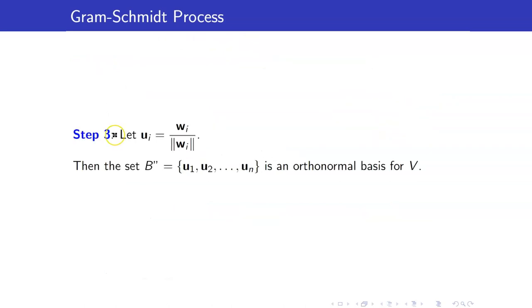Then for step 3, we just normalize each of the vectors obtained in step 2 to get an orthonormal basis for V.